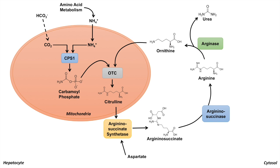Argininosuccinate will then be acted on by the enzyme argininosuccinate lyase to produce arginine. You can already see how the cycle continues. The two amino groups in urea come from two places: the ammonium brought into the mitochondria at first, and the other amino group comes from aspartate.